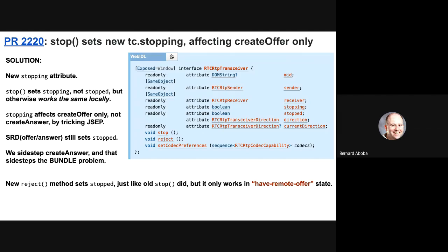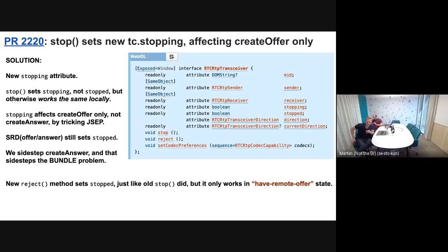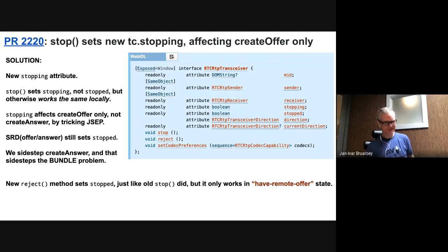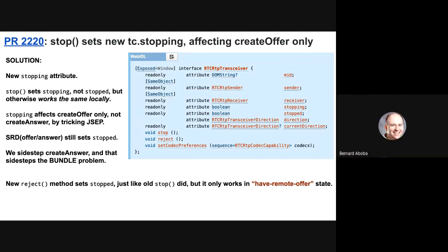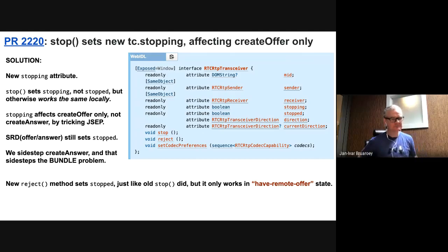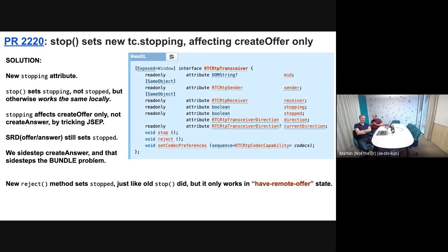There's a question: is there evidence that people are using stop? It was only recently added — Chrome doesn't have it. So fewer people are using it, obviously. I don't think we need reject, but I think we need stop. In order to move forward, this PR breaks up the existing stop into two methods — stop and reject — two functions for two different use cases. One is high-level: I'm done with the resources, clean them up. The other is: reject this M-line in the answer. By splitting them up, it allows us to talk about them separately, and we can talk about deprecating reject after.